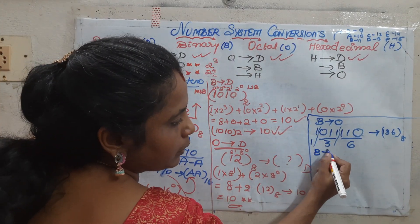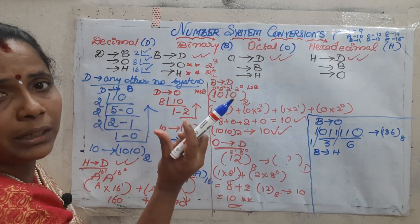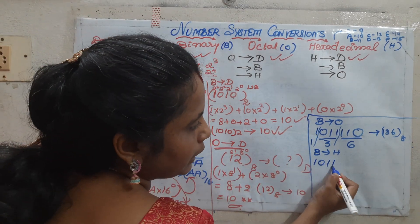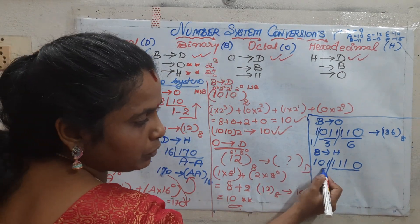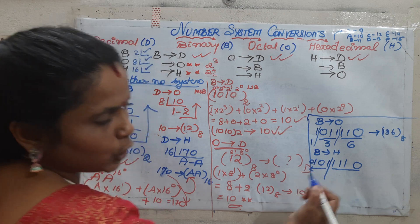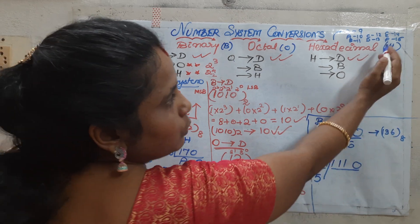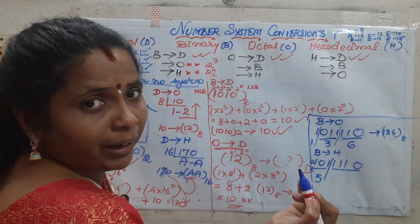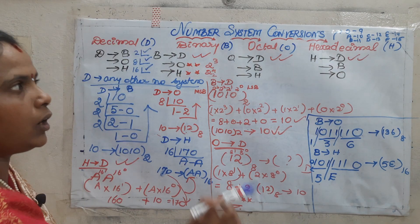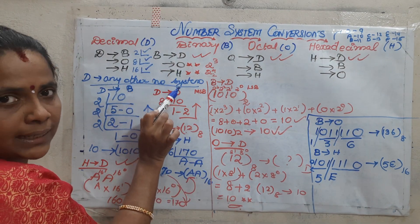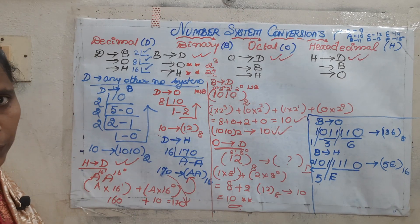Now I want to convert the same binary number to hexadecimal. The principle: group in terms of 4 bits. Taking the same number, count from the right: 1, 2, 3, 4. If there are fewer digits on the left, add a leading zero. The first group is 0101 which is 5, and the next group 1110 is 14, which I should write as E. So the answer is 5E base 16. The rule: group in 3s for octal, group in 4s for hexa, starting from LSB.